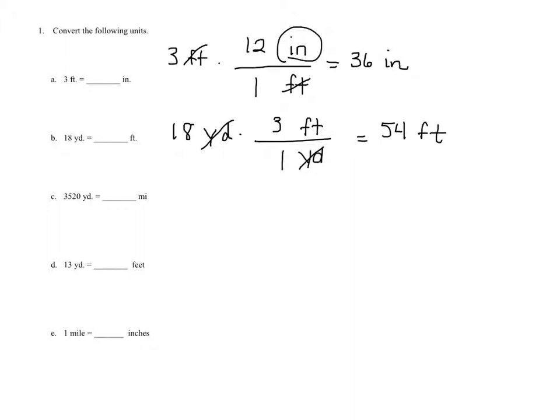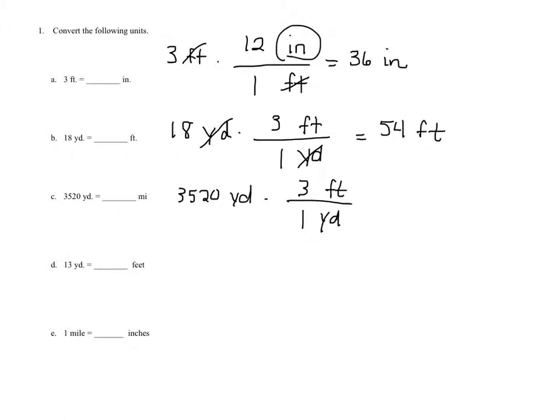The next one is 3,520 yards to miles. Now we don't have a conversion listed from yards to miles in the page before. So I'm going to kind of take you a little bit around the barn on this one. So 3,520 yards. We only know how many feet are in a mile. So I'm going to convert the yards to feet first. There's 3 feet in 1 yard. And then what I want to do is I want to get rid of the feet. So I want to convert that to miles.